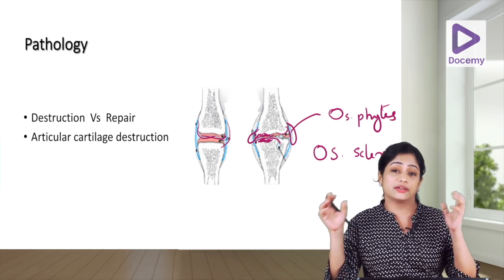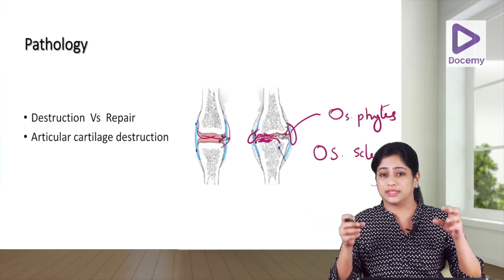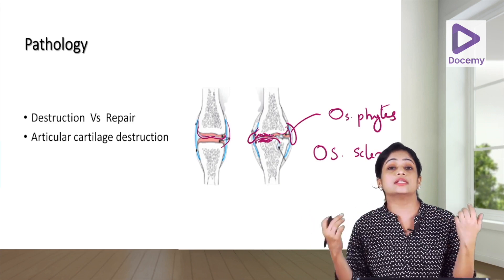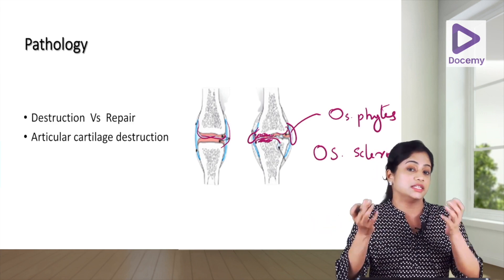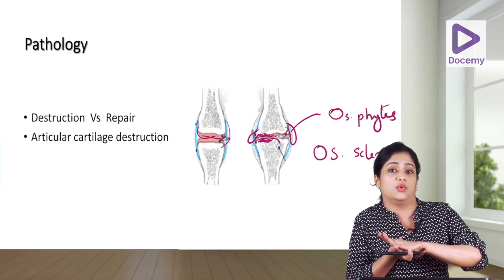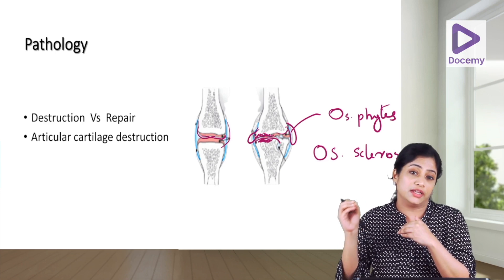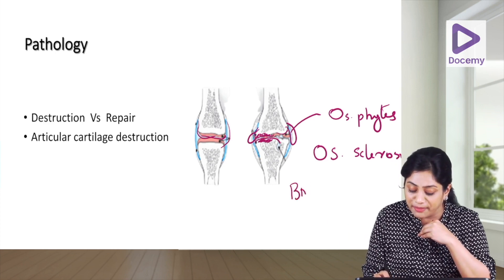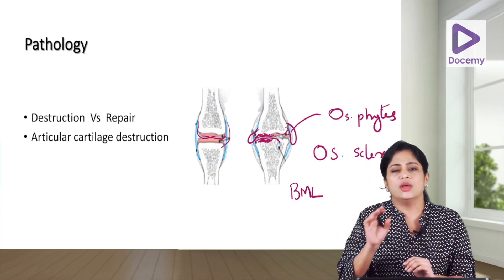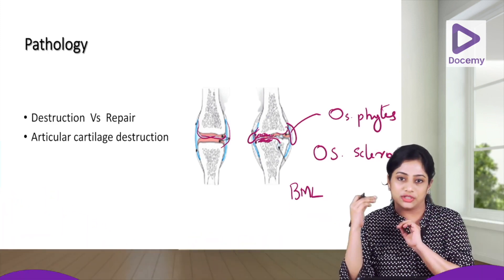Further progression of the disease results in release of chemicals and proteins from the destroyed articular cartilage. These float in the joint and incite inflammation, leading to synovitis. The repetitive trauma from rubbing bones also results in bone marrow edema, known as bone marrow lesions or BMLs, which are seen on MRI. These are the key pathological findings in osteoarthritis that explain all the radiological features.